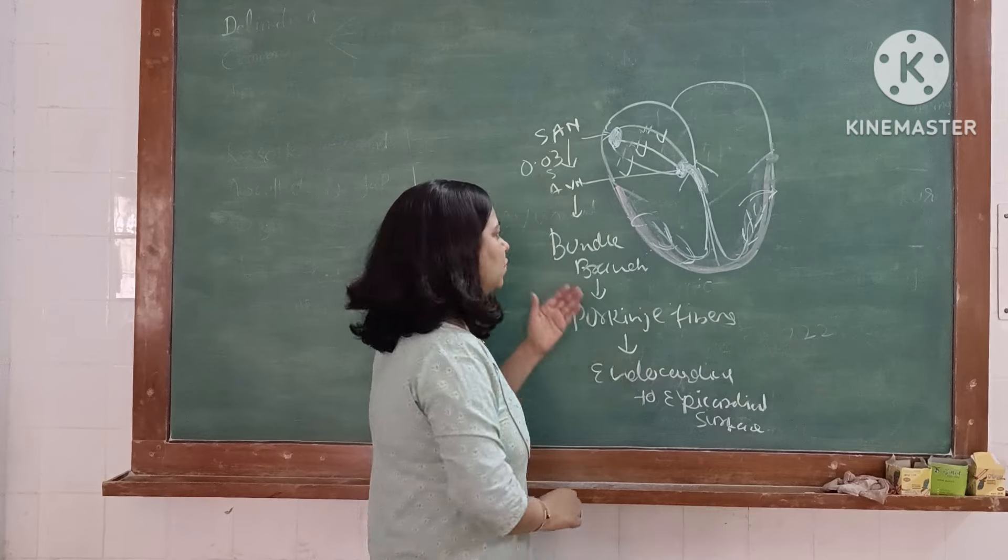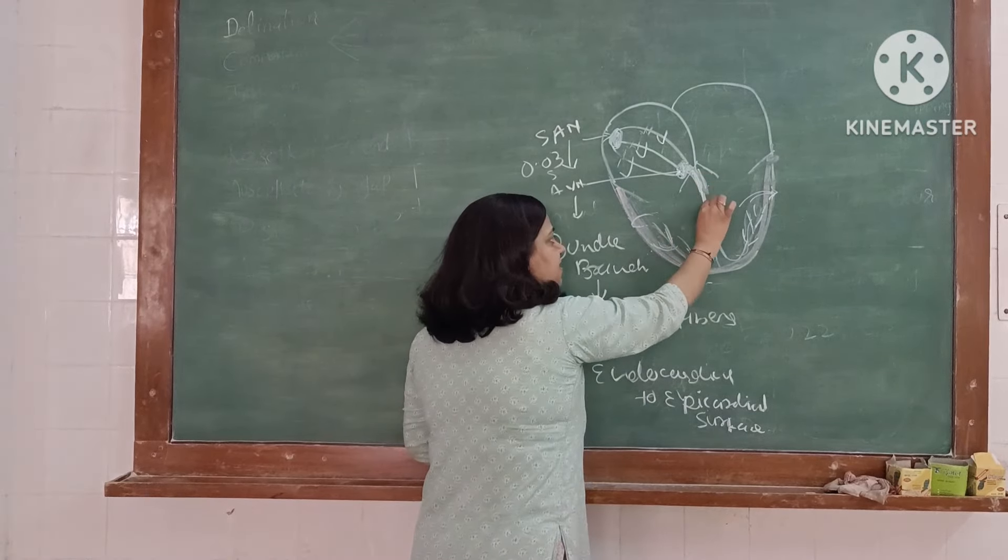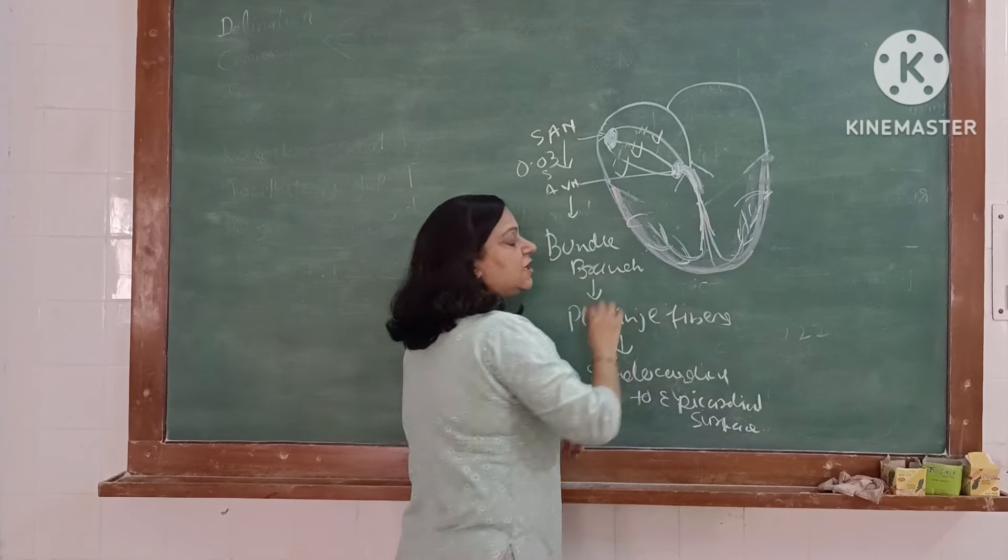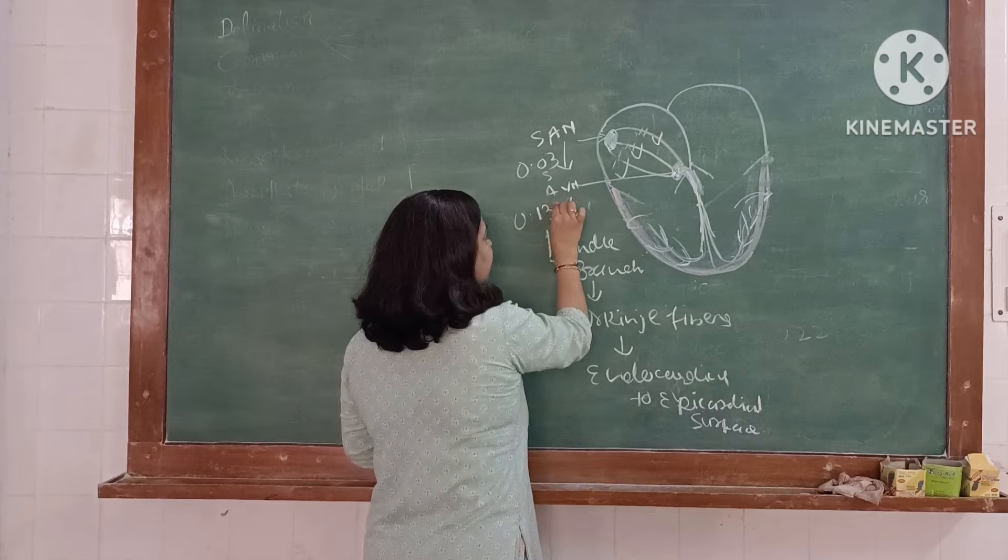From AV node, impulse will travel and reach the bundle branch. Time taken for this is 0.13 second.